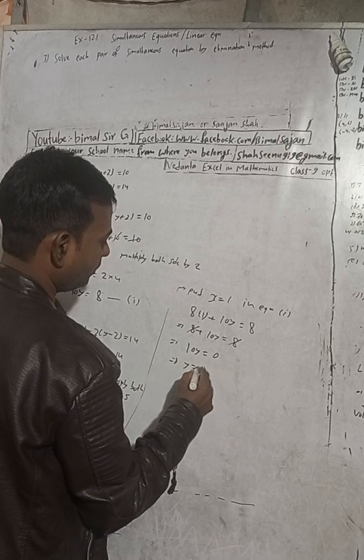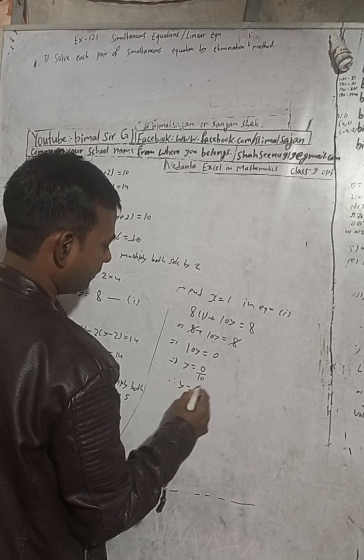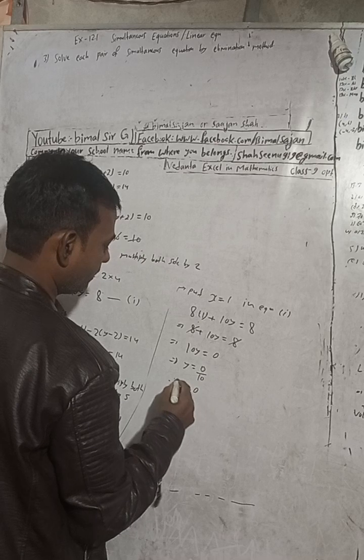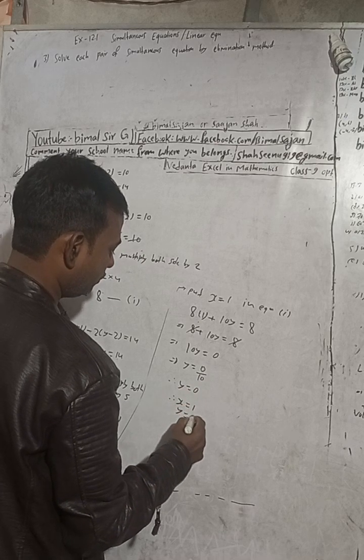10y = 0. Therefore y = 0/10. Therefore y = 0, by anything is what? 0/10 is 0. Therefore now x = 1 and y = 0 is answer.